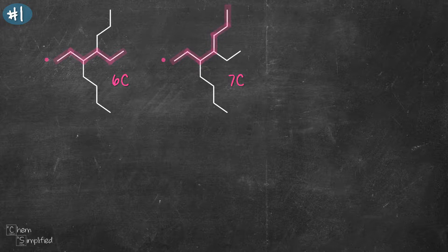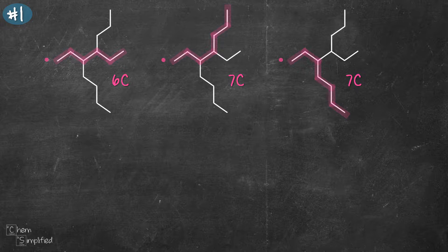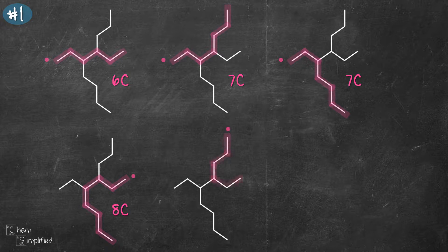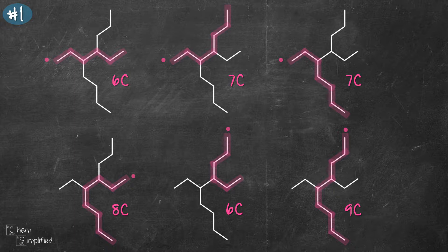Instead of going up, let's try going down — and that's still seven carbons long. Now let's try counting from a different point on the right-hand side. Going right to down gives us eight carbons, which is longer than what we've counted so far. What about going up? From up all the way to the bottom, that gives us the longest chain, which is nine carbons.